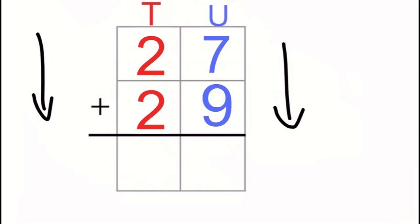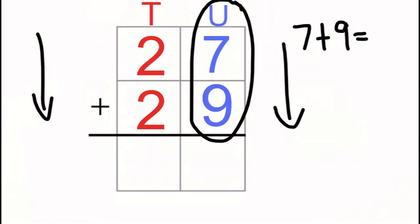We do exactly the same as before. First, we look at just the units column. We can see that we need to do seven add nine. We know that seven add nine is 16. Now, this is where it gets a little bit difficult.